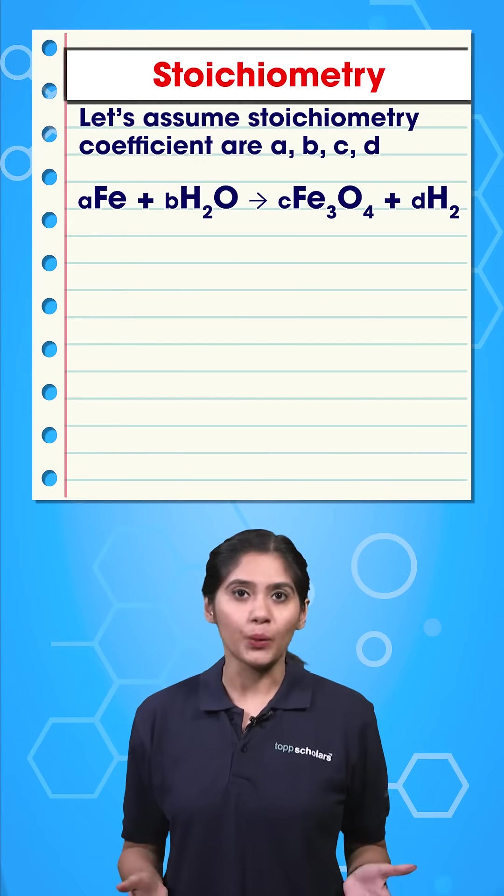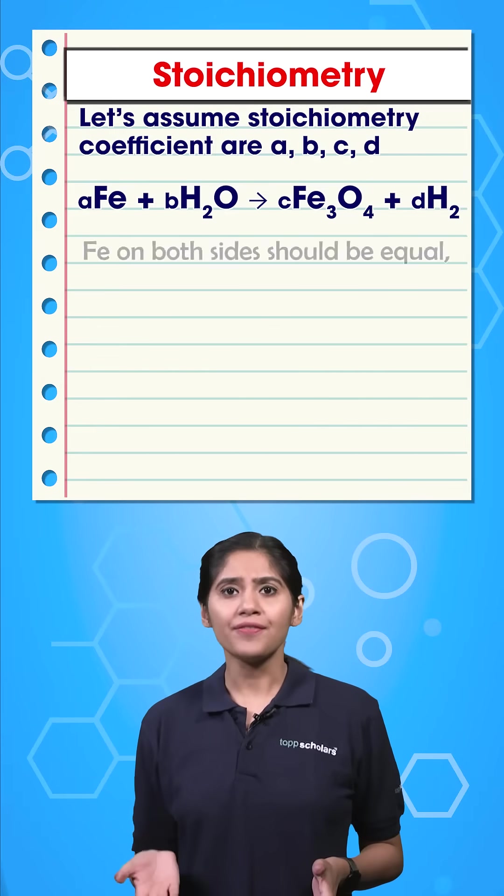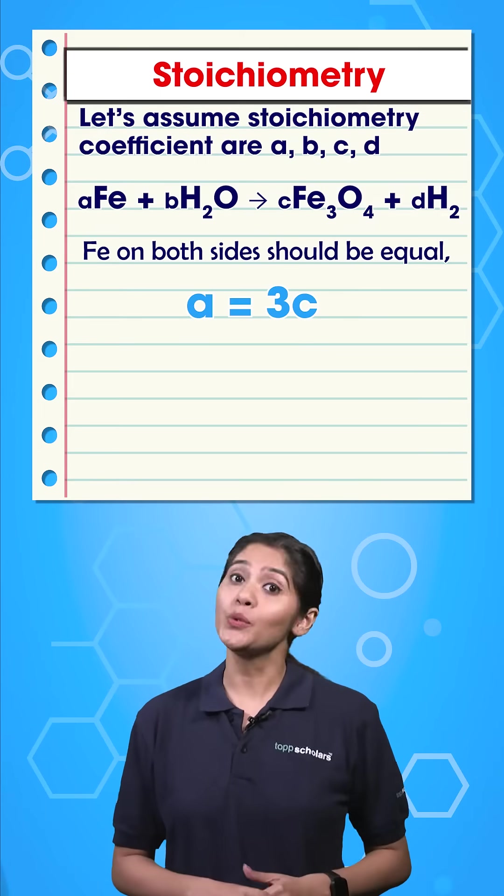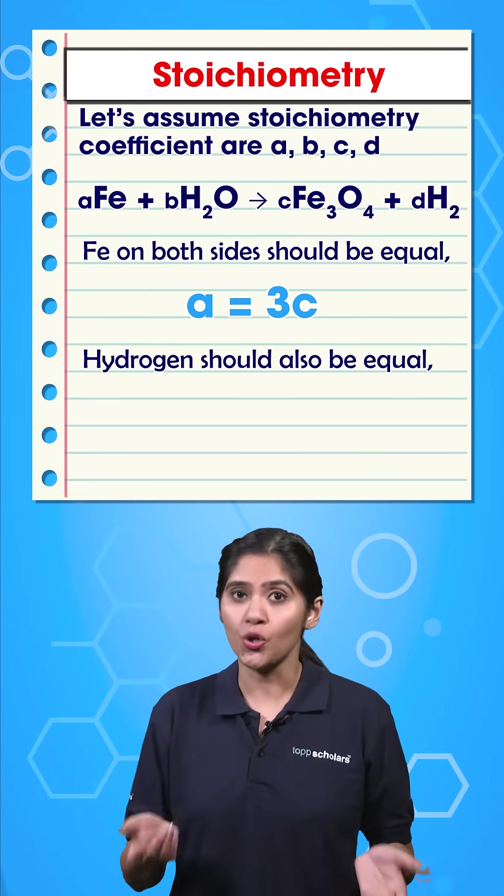Let's assume that the equation is balanced. Then Fe on both sides should be equal. Hence, A is equal to 3C. Hydrogen should also be equal.